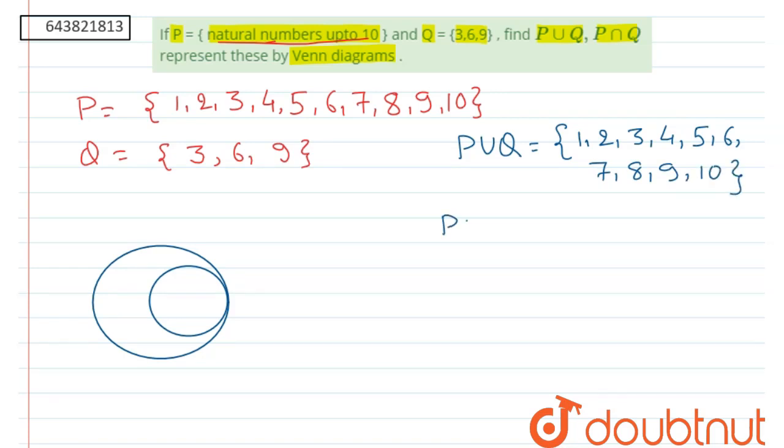And P intersection Q will be set Q itself, again because Q is a subset of P. So it has element 3, 6, 9.